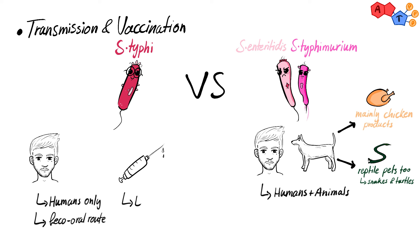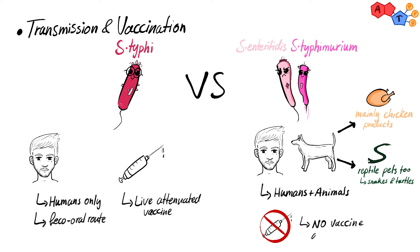Lastly, we have a live attenuated vaccine for Salmonella typhi, but on the other hand we don't have a vaccine for the non-typhoidal type yet, so maybe in the future a vaccine will be found for it.